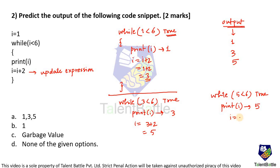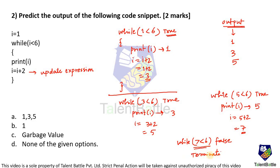After printing 5, i is updated to 5 + 2 = 7. In the fourth check, the condition 7 less than 6 is false, so the loop terminates. The output received is 1, 3, and 5. Looking at the options, option A showing 1, 3, 5 is the correct answer. Basic knowledge of while loop iteration is sufficient to solve this question.